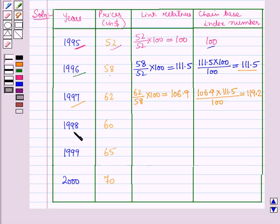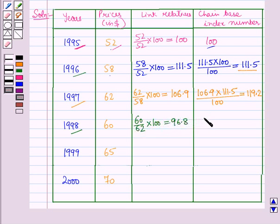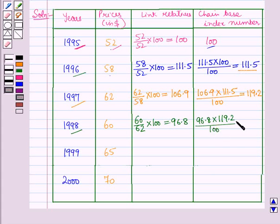For 1998, the link relative is 60 over 62 into 100, which is equal to 96.8, and the chain base index number is equal to 96.8 into 119.2, whole upon 100, which is equal to 115.4.